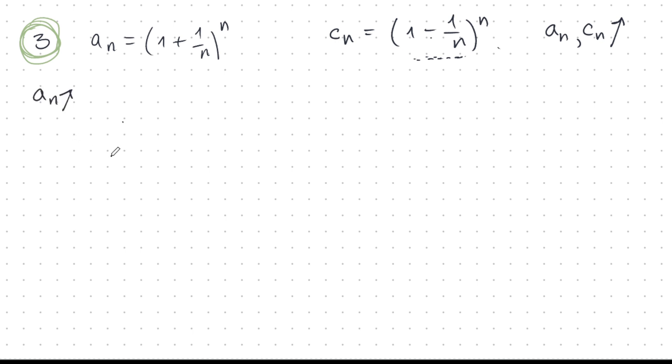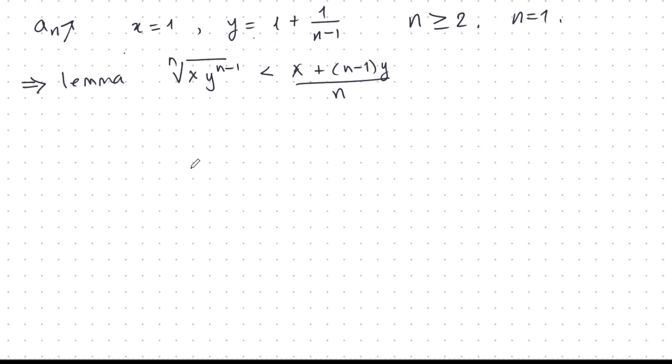So let's prove that a_n is interesting. Monotonically interesting. Yes, it is interesting. Let's prove that it's increasing. So we'll choose x is one and y is one plus one over n minus one. We have to take n is greater than or equal to two here. The case when n is one can be proved by just direct computation. So we don't worry about it. And if we take this x and this y and plug it into the lemma, okay, you remember the lemma that was part two, right? So let's plug this all in and see what happens.